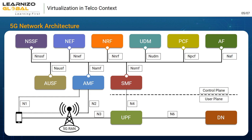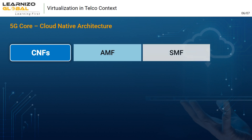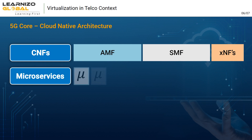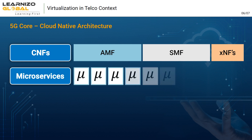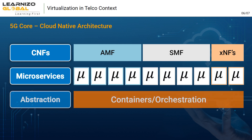but some functions of radio networks can also be deployed in containerized environments. 5G network functions like AMF and SMF are broken down into multiple microservices, and these microservices can be hosted on containers.